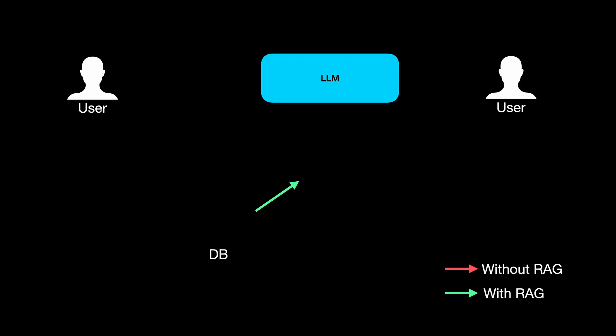So what is RAG? If you take a standard LLM, the user interacts or queries using a prompt and the LLM responds with a reply. This is fine as long as the LLM has an answer, but if the query is totally alien to the LLM, it starts making up answers — similar to how we start guessing answers when we do not know them during an exam.